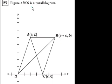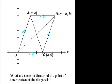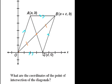Problem 59. Figure ABCO is a parallelogram — that side is parallel to that side, and that side is parallel to that side. What are the coordinates of the point of intersection of the diagonals? The key thing you need to know is that for any parallelogram, the diagonals bisect each other. So the distance from O to the intersection point equals the distance from the intersection point to B, meaning this intersection point is the midpoint of diagonal OB.